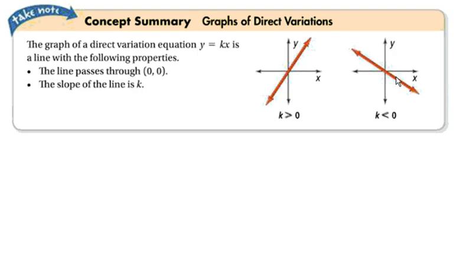With direct variation, since it is just y equals k times x, every direct variation graph is going to go through the origin — through the point (0, 0).